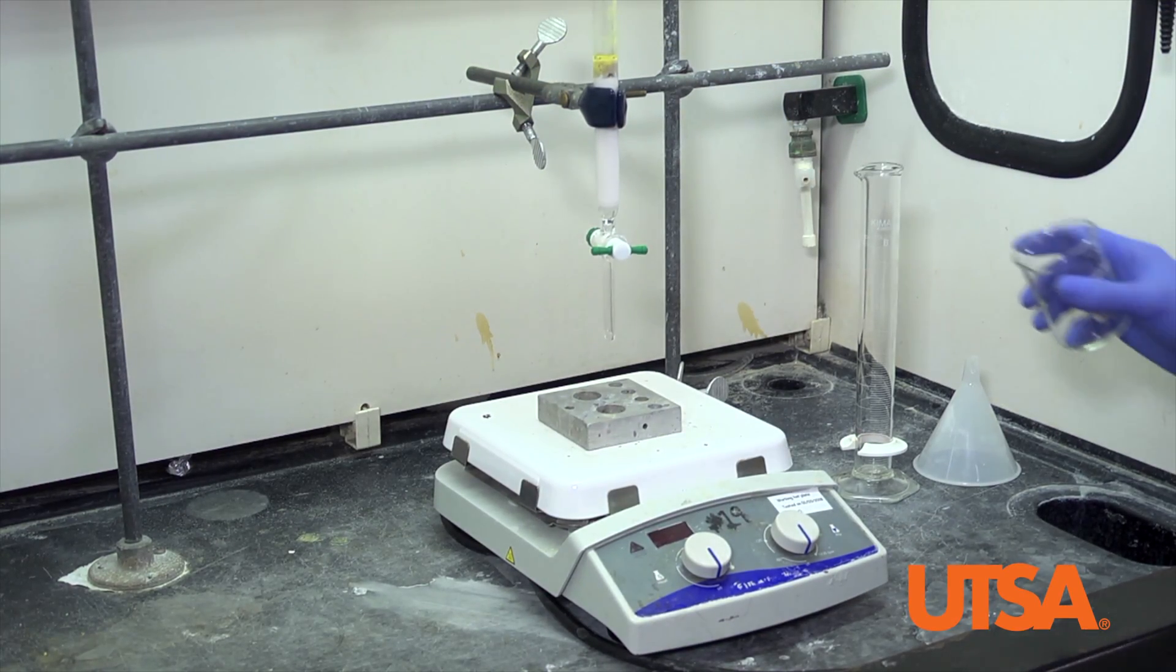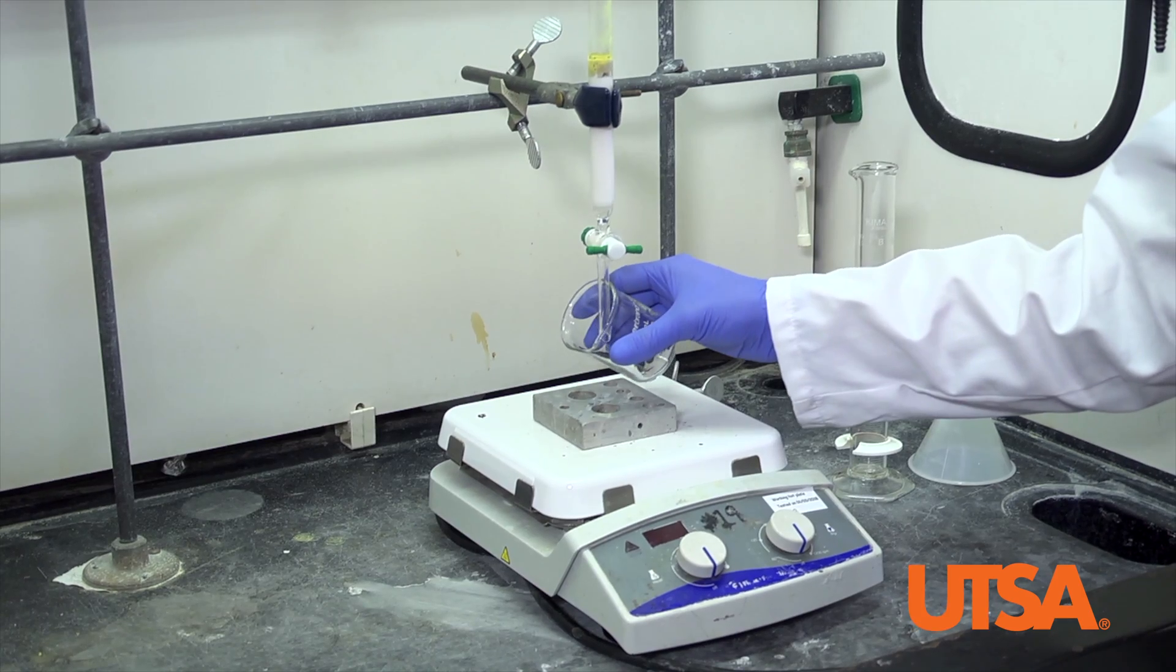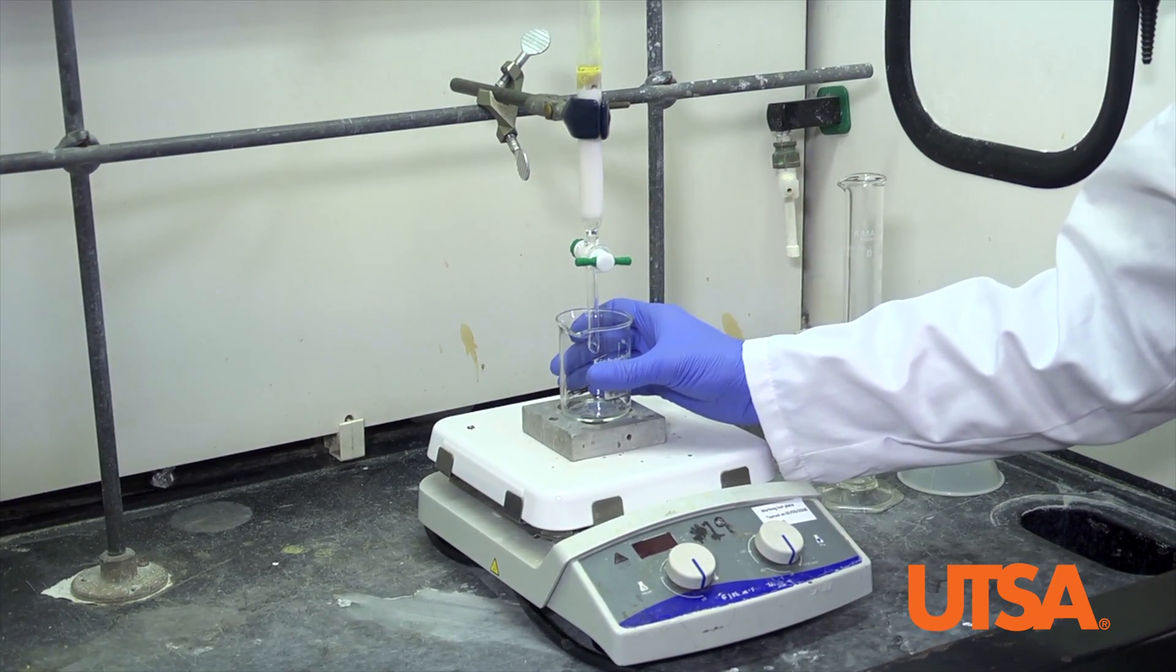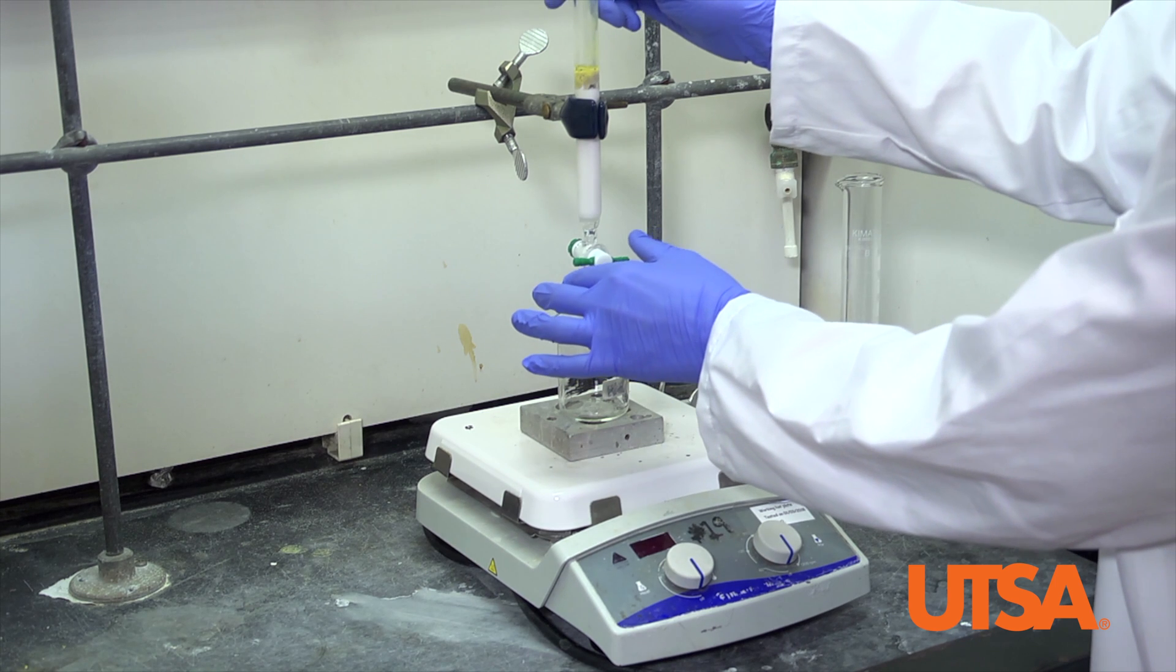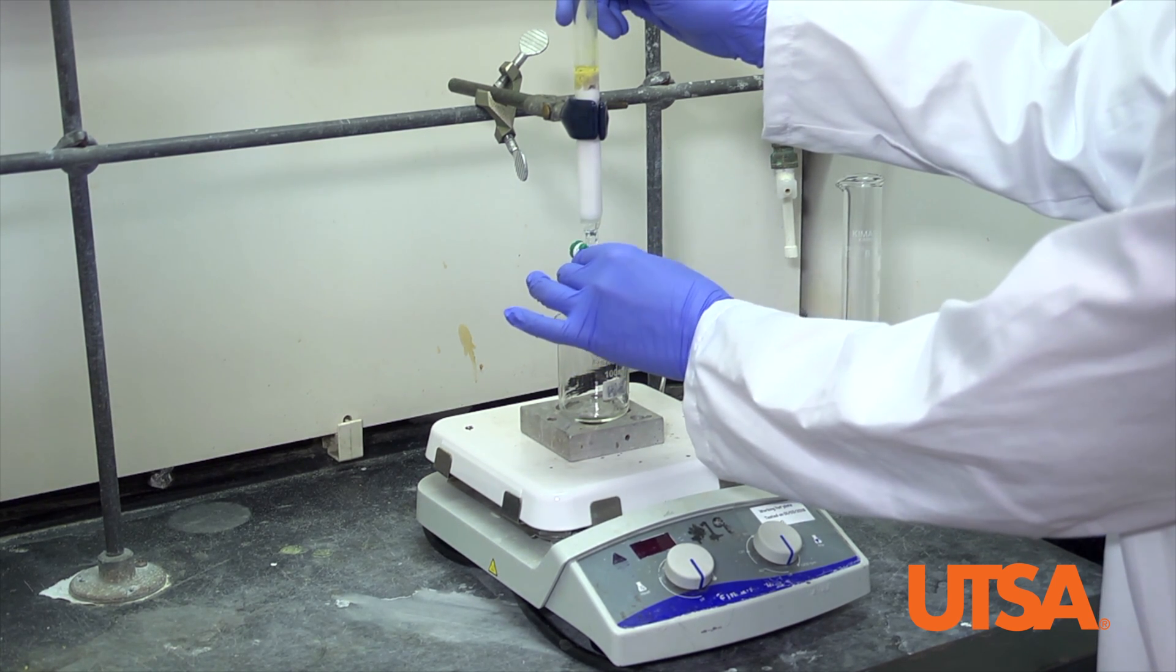Add a new Erlenmeyer flask beneath the column and open the stopcock to drain your sample to the top of the alumina.